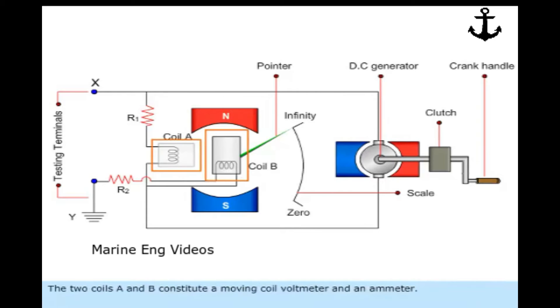The two coils A and B constitute a moving coil voltmeter and an ammeter. Both are combined to form one instrument.